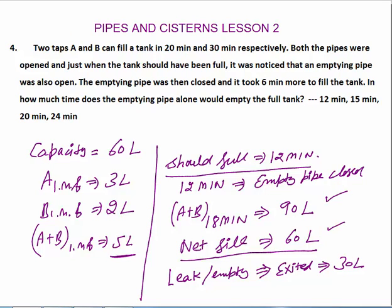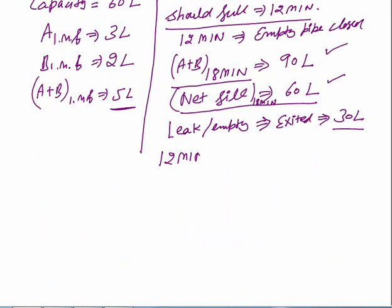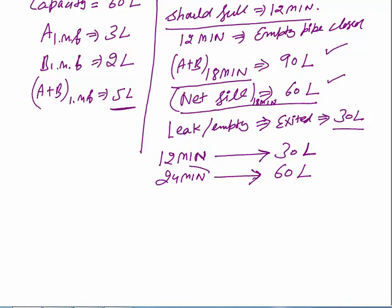The filling pipes filled 90 liters but net fill was 60 liters, so 30 liters was exited by the emptying pipe. The emptying pipe was open for 12 minutes. So it exited 30 liters in 12 minutes. To exit the full 60 liters, it requires 24 minutes. So the emptying pipe empties the full tank in 24 minutes.